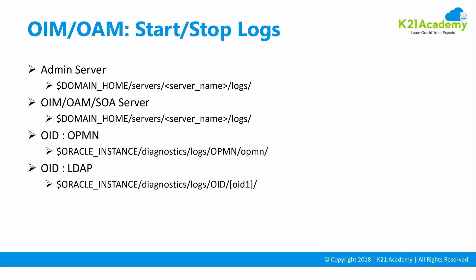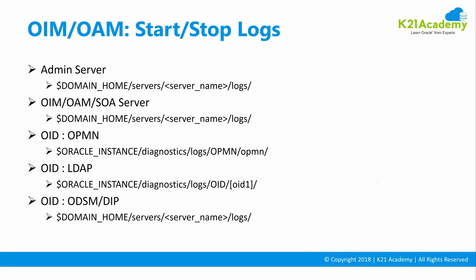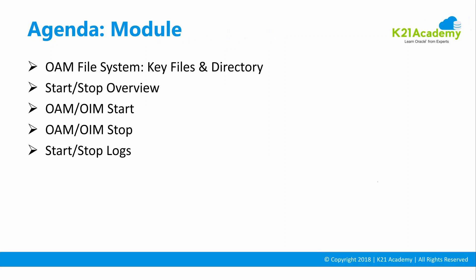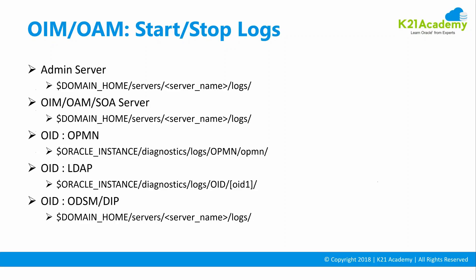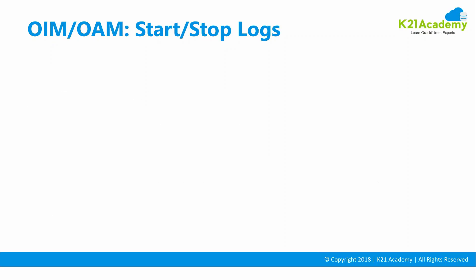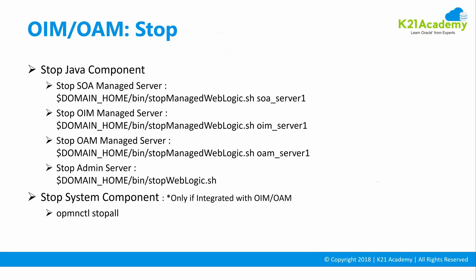You might also have a managed server for OID — for ODS or ODSM — so go to domain home, servers, name of the managed server for OID which is WLS_ODS1, and then logs. There are also OID, ODSM, and DIP log files. This completes the start and stop topic — make sure you complete the activity guide for start and stop of OID.